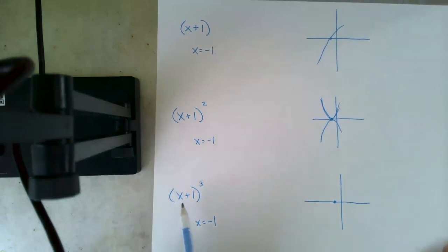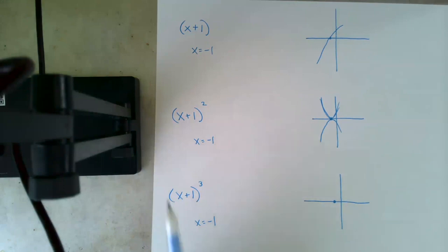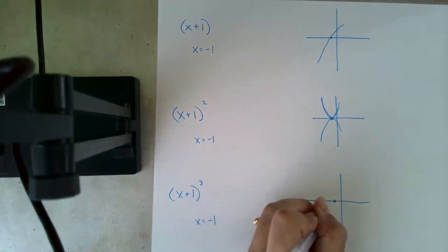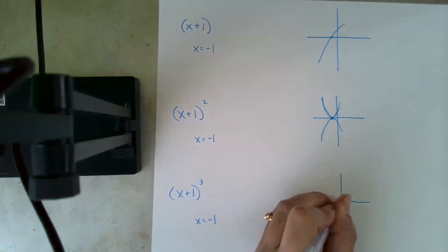And finally, for a multiplicity of three, or any odd multiplicity greater than one, you can expect to pass through your zero, but change your direction.